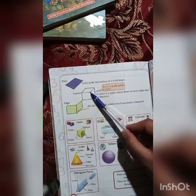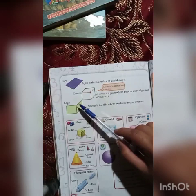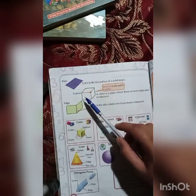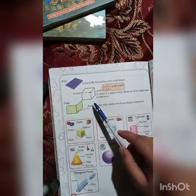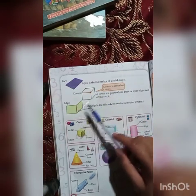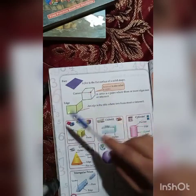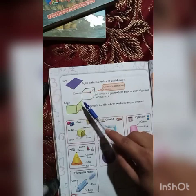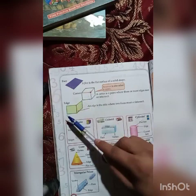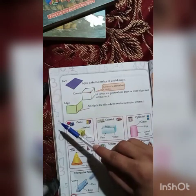Corner. A corner is a point where three or more edges intersect. It is called a vertex. Okay students, also called a corner.